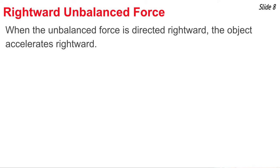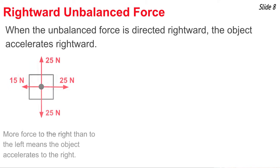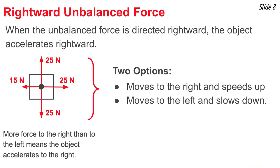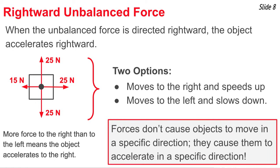Here's the rule: when the unbalanced force is directed rightward, the object will accelerate rightward. A force diagram with more force to the right than to the left is a rightward unbalanced force, leading to a rightward acceleration. This leaves the object two options: it could be moving to the right and speeding up, or it could be moving to the left and slowing down. In both instances the object has a rightward acceleration. Crucially, a rightward unbalanced force does not cause rightward motion — what it causes, for certain, is a rightward acceleration. Forces don't cause objects to move in a specific direction; they only cause objects to accelerate in a specific direction.